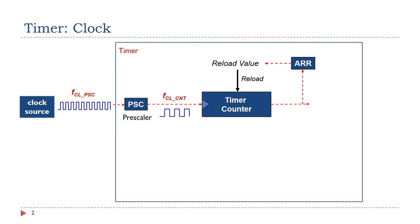A timer is a hardware component built within a processor chip. Each timer has a special register called the timer counter. The counter runs freely — if enabled, it automatically counts upwards or downwards driven by a clock source. It is hardware, not software, which keeps repeatedly incrementing or decrementing the counter value. For each rising edge in the clock signal, hardware increments or decrements the counter by one automatically. That is why we say the timer counter is a free-running counter.